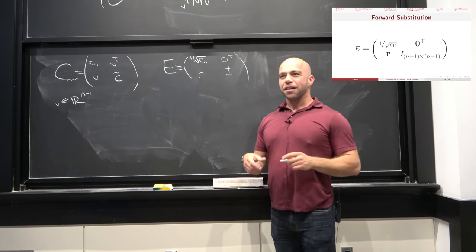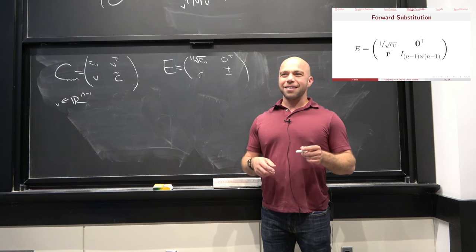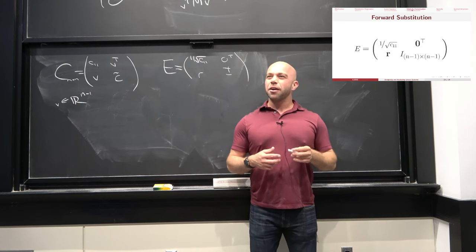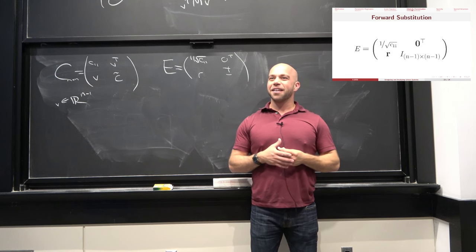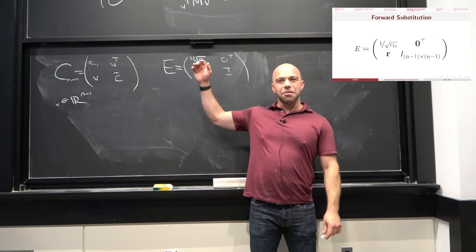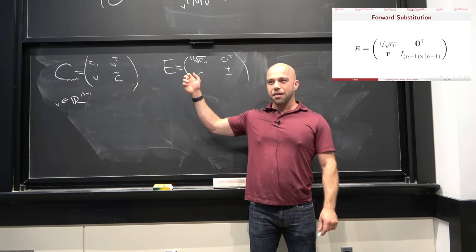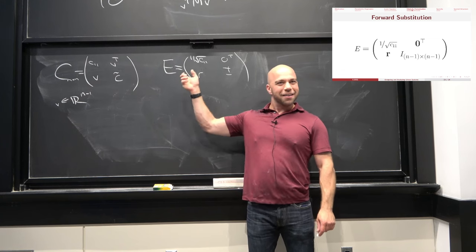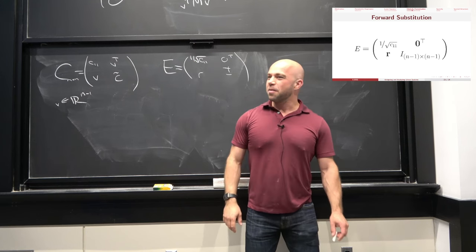Sanity check: what could go wrong with this expression? C₁₁ certainly can't be 0, because 1/0 is undefined. Moreover, any value less than or equal to 0 is problematic, because we're taking a square root. So before defining E, we need to make sure this is kosher. We can prove this using positive definiteness: if we take e₁^T C e₁, this equals C₁₁, and since our matrix is positive definite and e₁ is non-zero, C₁₁ > 0. So we haven't divided by zero or by an imaginary number.